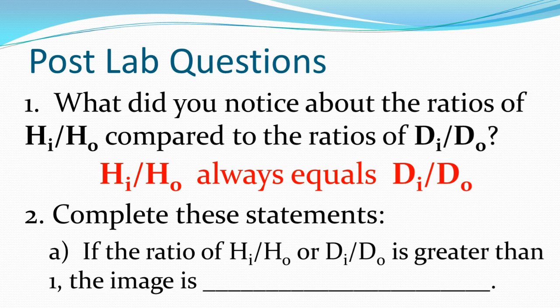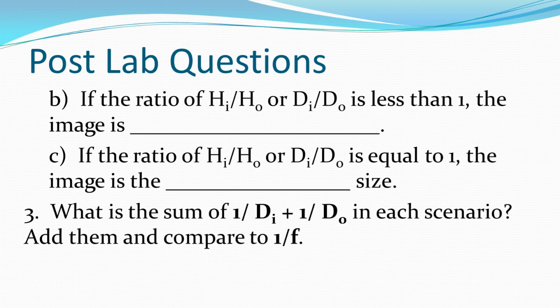hi/ho equals di/do. Complete these statements based on your observations. If the ratio of hi/ho or di/do is greater than 1, the image is bigger. If the ratio is less than 1, the image is smaller. If the ratio is equal to 1, the image is the exact same size.